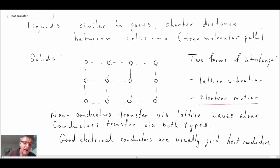Non-conductors, which would be insulators, transfer energy via lattice waves alone. If you have a good conductor, conductors transfer both through lattice waves or lattice vibration as well as electron motion.